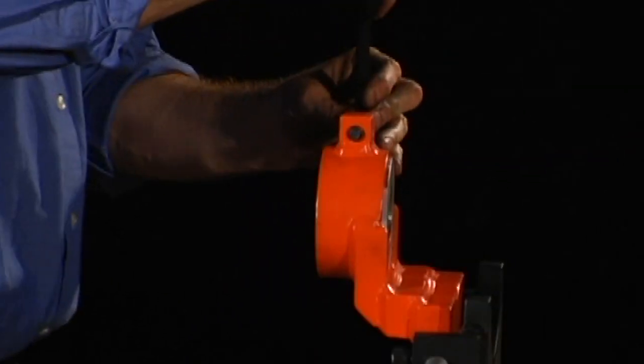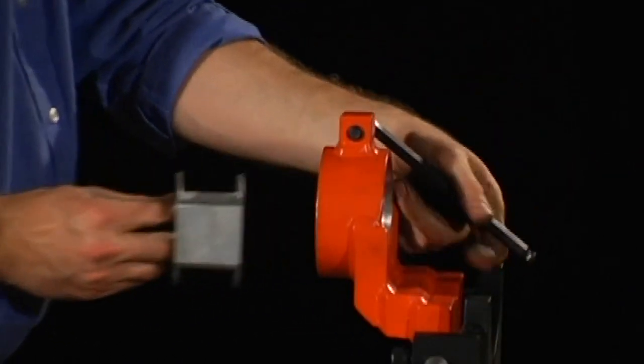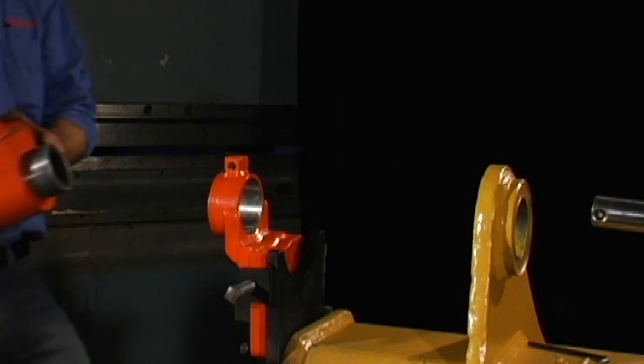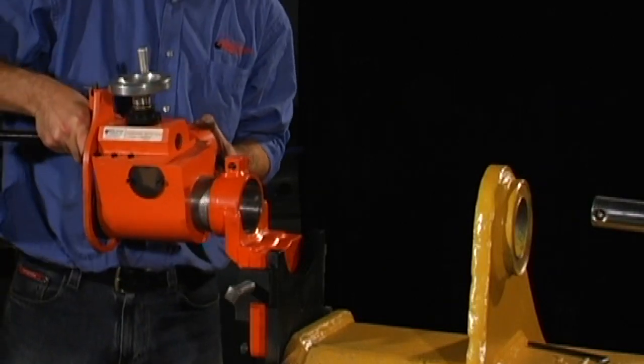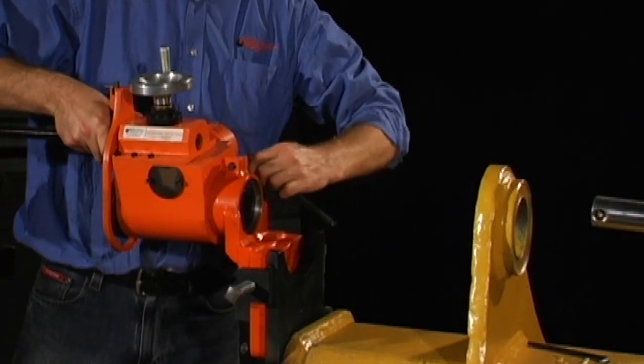Remove the boring bar insert from the machine support assembly. Mount the boring bar drive gearbox to the machine support and tighten the clamping hex nut.